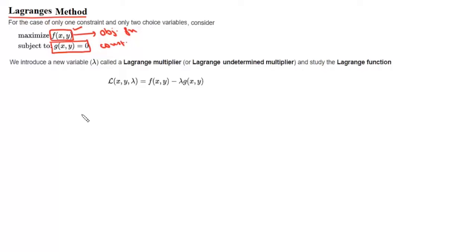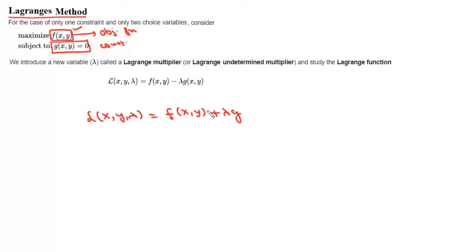We solve such questions using Lagrange's method, and for this we define a Lagrange's function. The Lagrangian L(x, y, lambda) is the objective function f(x,y) plus or minus lambda times the constraint g(x,y). The variable lambda is called the Lagrange's multiplier.